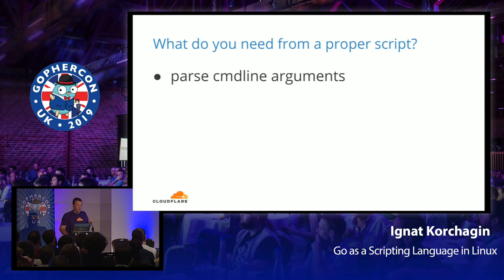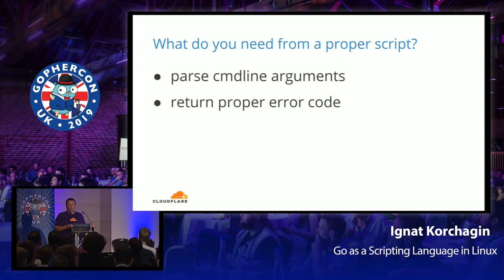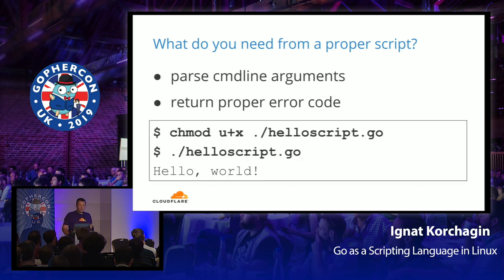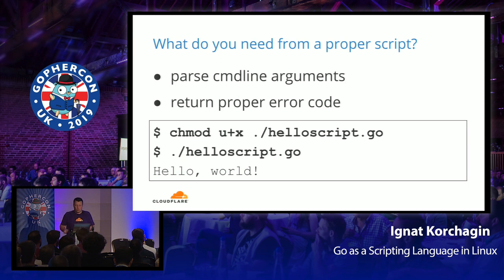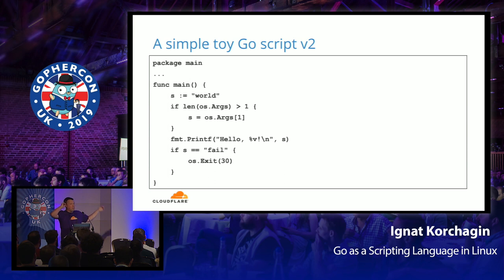Real-world scripts are much more complex, so what do we usually need from a script? At least three things: we want the script to parse command-line arguments; we want it to return proper error codes to the operating system, because error codes are how processes communicate in a pipeline; and we don't want to type `go run` each time — we want to mark the file as executable and run it directly, the same way you can do with Python.